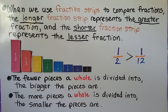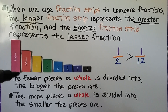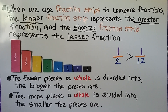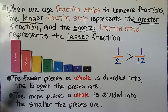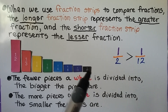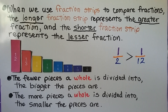When we use fraction strips to compare fractions, the longer fraction strip represents the greater fraction and the shorter fraction strip represents the lesser fraction. So one-half is greater than one-twelfth.